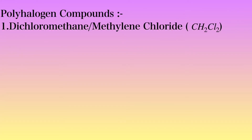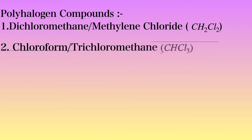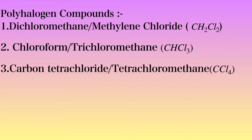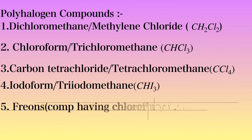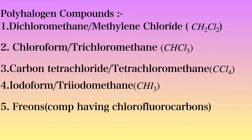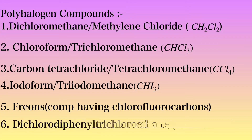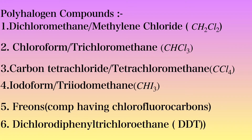In this topic, we are going to consider the polyhalogen compounds such as: first, dichloromethane, also known as methylene dichloride; second, chloroform or trichloromethane; third, carbon tetrachloride or tetrachloromethane; fourth, iodoform or triiodomethane; fifth, freons, also known as chlorofluorocarbons; and last, dichloro-diphenyl-trichloroethane, generally known as DDT.